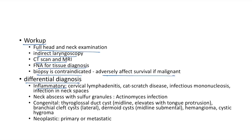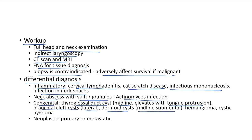Differential diagnosis of neck mass: inflammatory causes include cervical lymphadenitis, cat scratch disease, infectious mononucleosis, and neck space infections. Neck abscess with sulfur granules indicates Actinomyces infection. Congenital causes: thyroglossal duct cyst (midline, elevates with tongue protrusion), branchial cleft cyst (lateral neck mass), and dermoids (midline submental). Other causes include hemangioma and cystic hygroma. Neck masses can be primary or metastatic neoplastic masses.